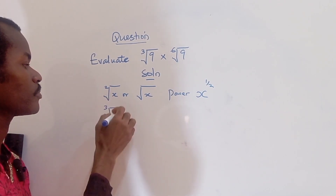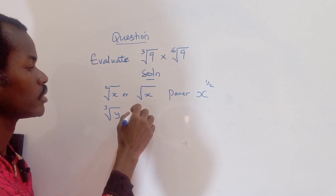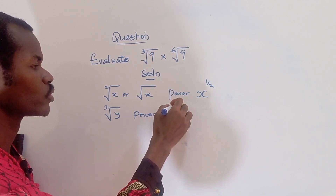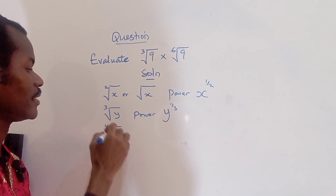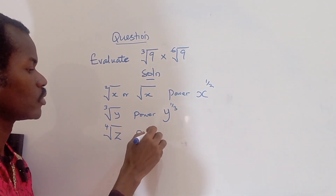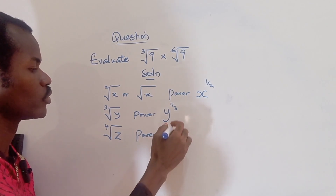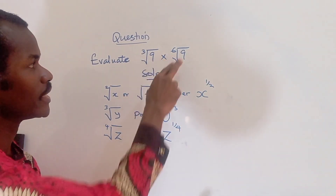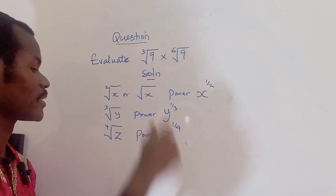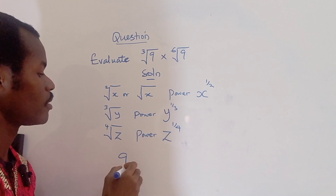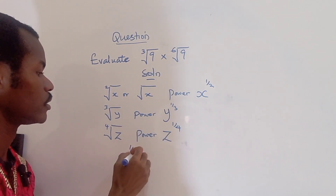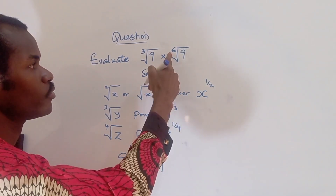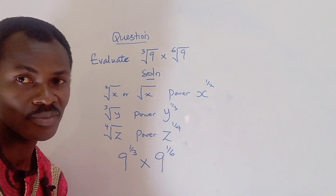So this means y raised to the power of one third. And if I have this, it means z raised to the power of one fourth — and so on. So for this problem I can write the first part as nine raised to the power of one third, and the second part as nine raised to the power of one sixth.